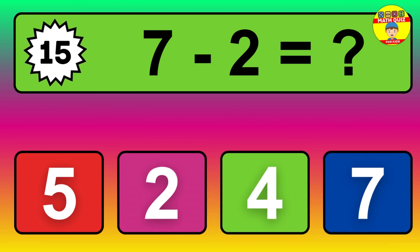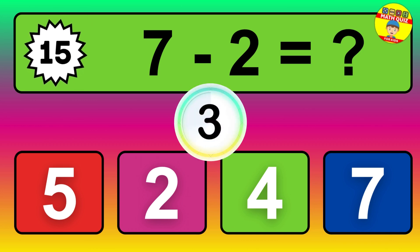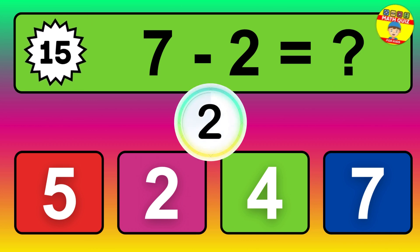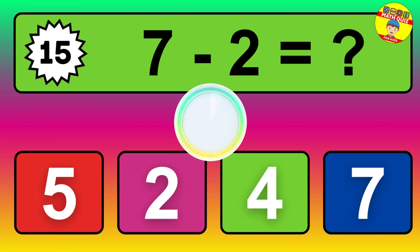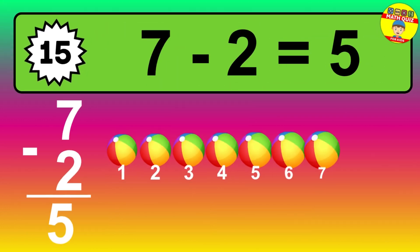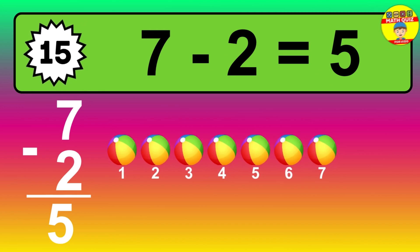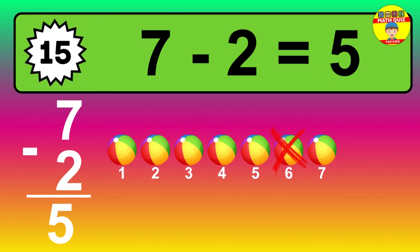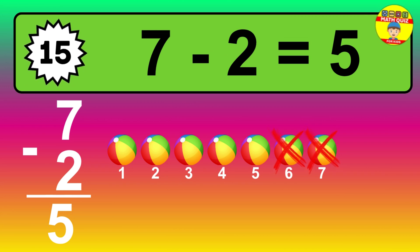Question fifteen: seven minus two equals what? So the answer is seven minus two is five. Let's count it. One, two, three, four, five.